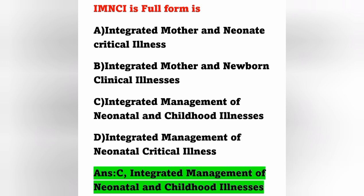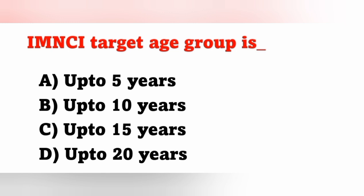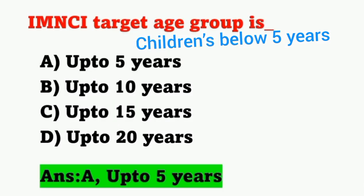Next question: IMNCI target age group is? Options: A) Up to 5 years, B) Up to 10 years, C) Up to 15 years, D) Up to 20 years. IMNCI — Integrated Management of Neonatal and Childhood Illness — targets children up to 5 years of age, or children below 5 years.